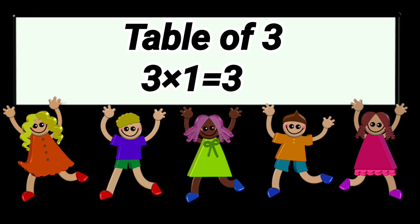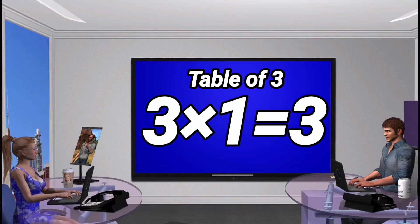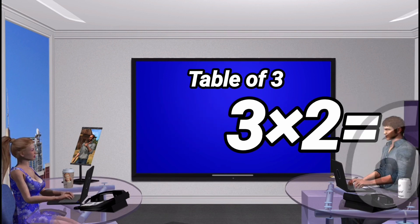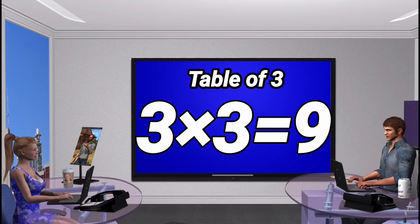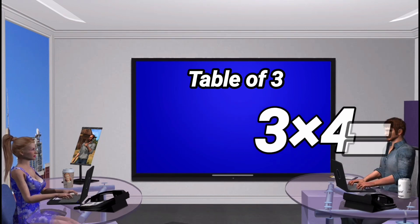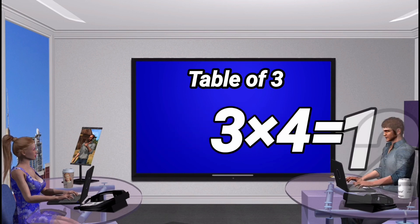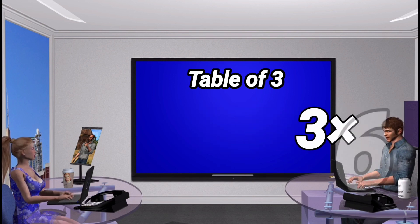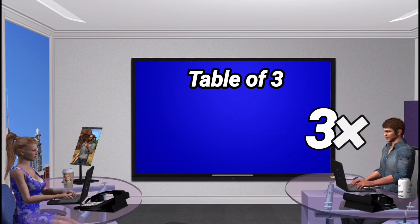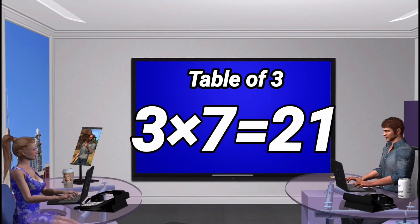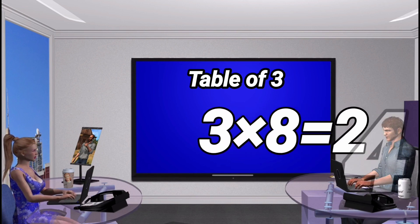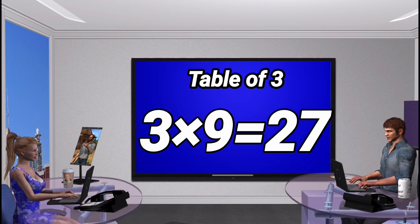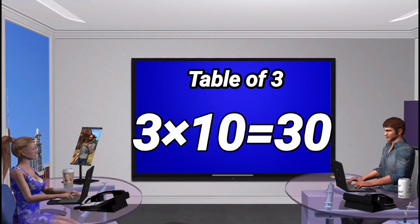Table of 3. 3 times 1 is 3. 3 times 2 is 6. 3 times 3 is 9. 3 times 4 is 12. 3 times 5 is 15. 3 times 6 is 18. 3 times 7 is 21. 3 times 8 is 24. 3 times 9 is 27. 3 times 10 is 30.